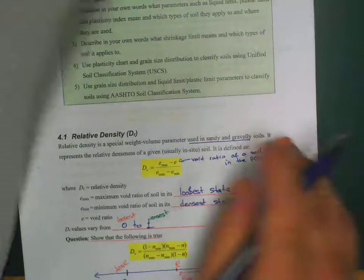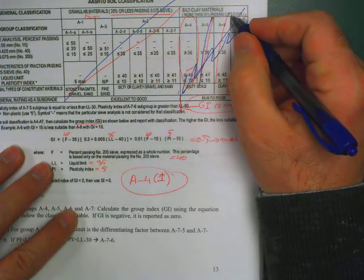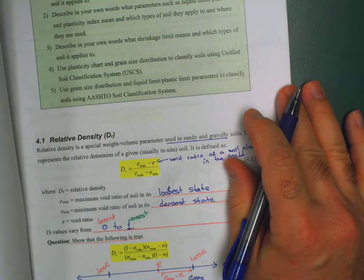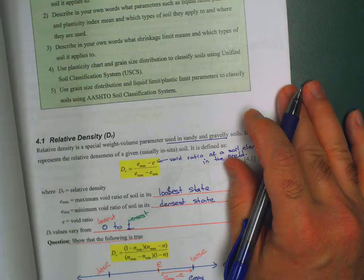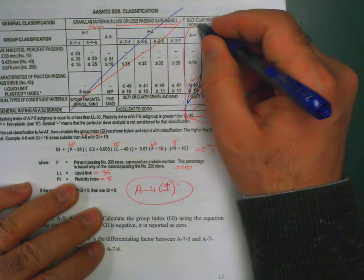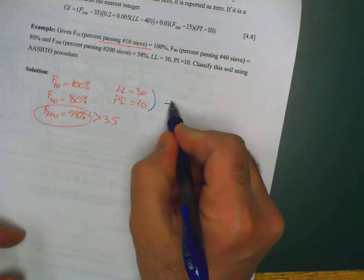Let's look at the liquid limit, it's 30, which narrows it down to these two options. Plasticity index is 10. It turns out to be the same soil, A4. So it comes out to be A4 soil.